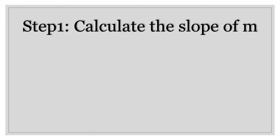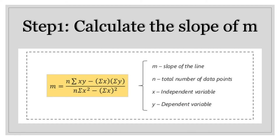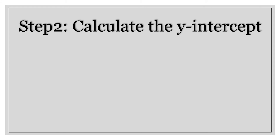Step one is to calculate m, that is your slope of the line. You can calculate m using the formula shown on the screen. All you have to do is substitute the values of x and y in this equation and you will get m. n here will be the total number of data points — suppose if I have five data points then n will be equal to five. Substitute all of these values in this equation and you will get the slope of the line.